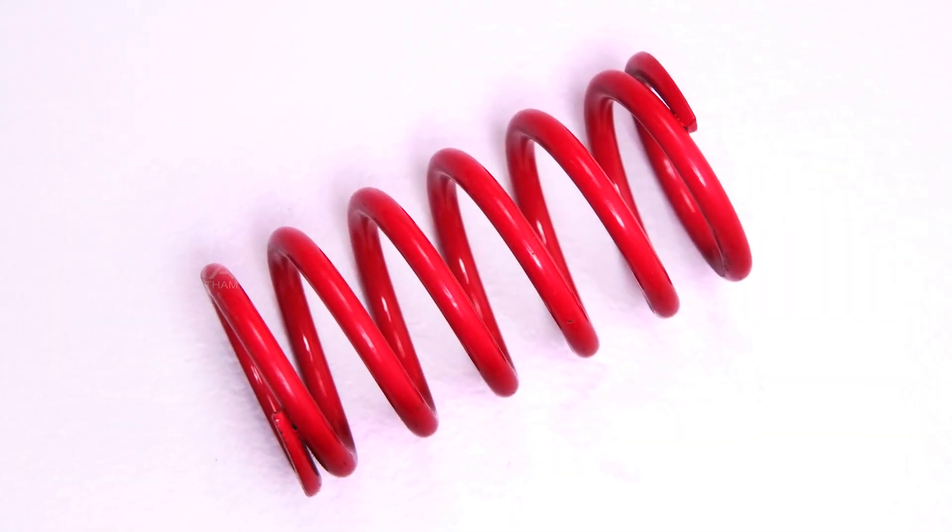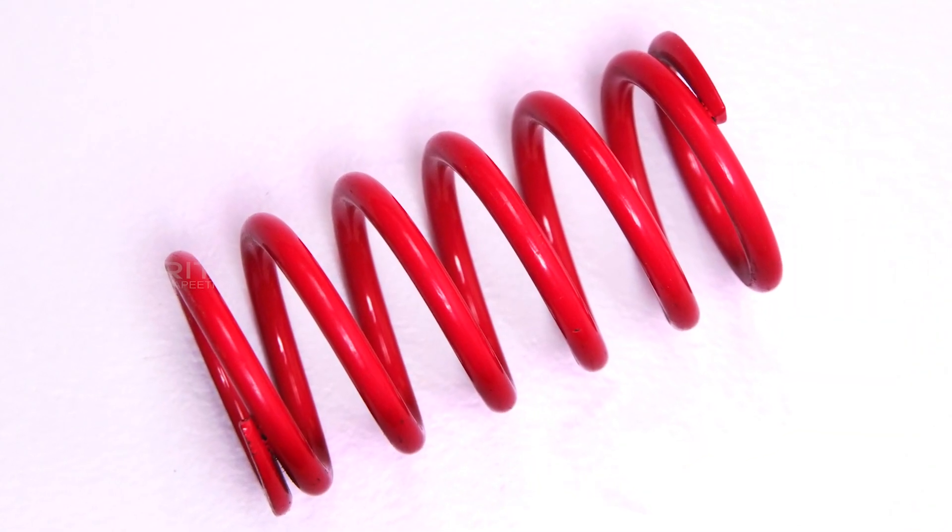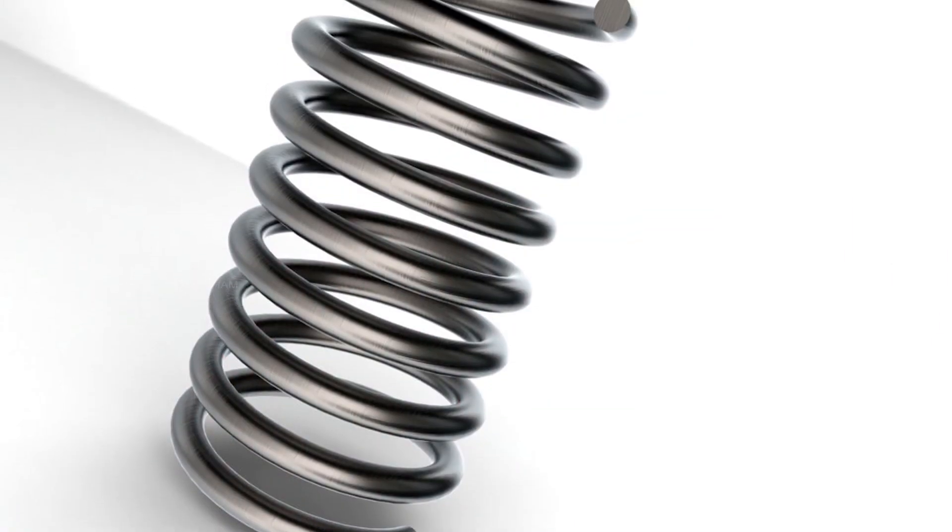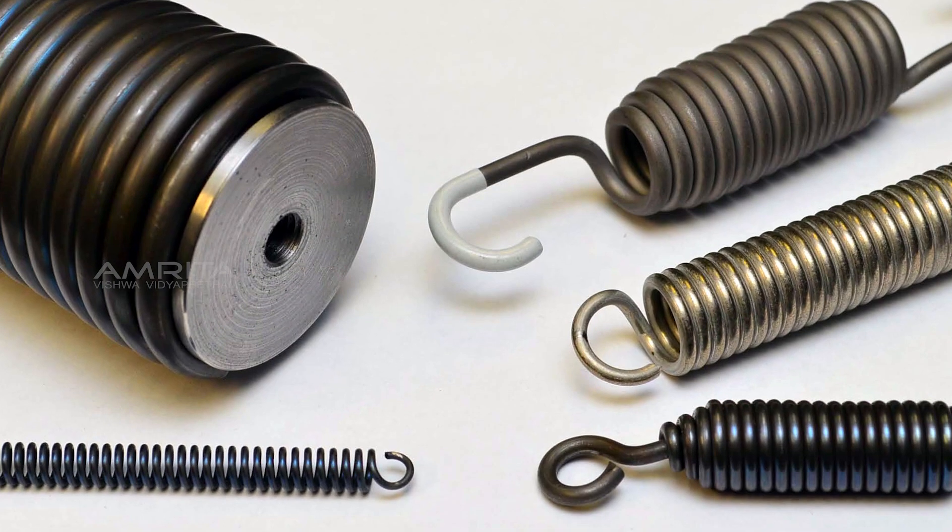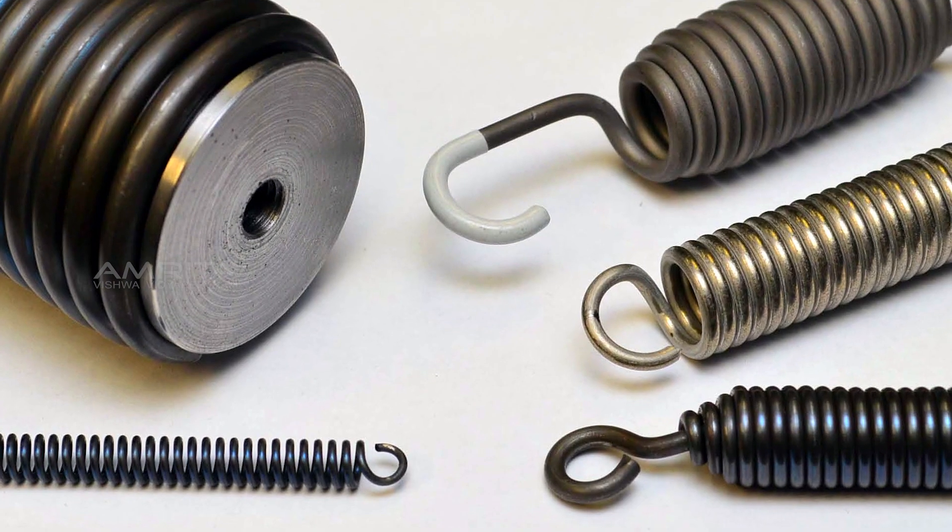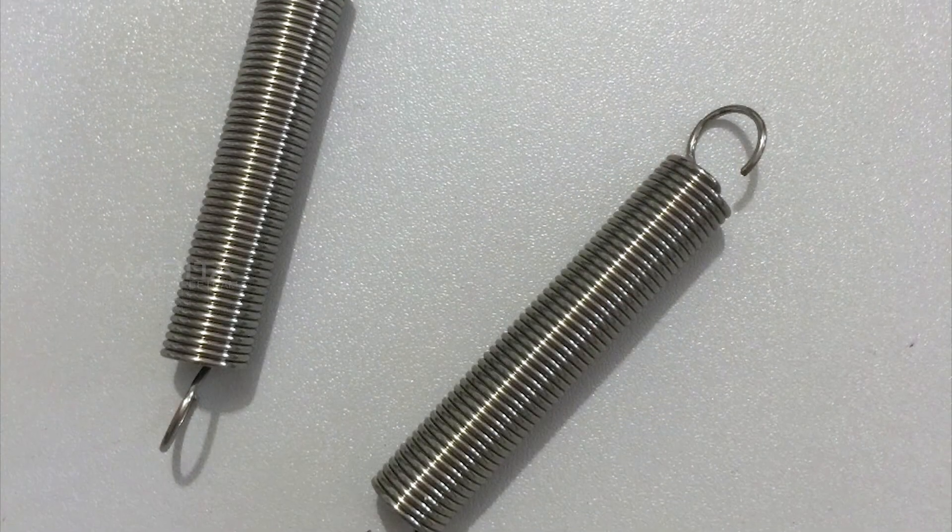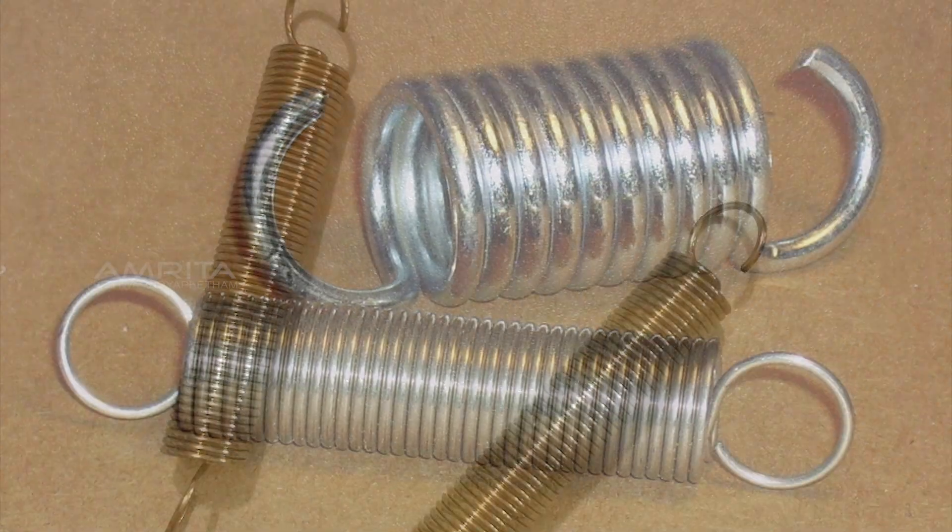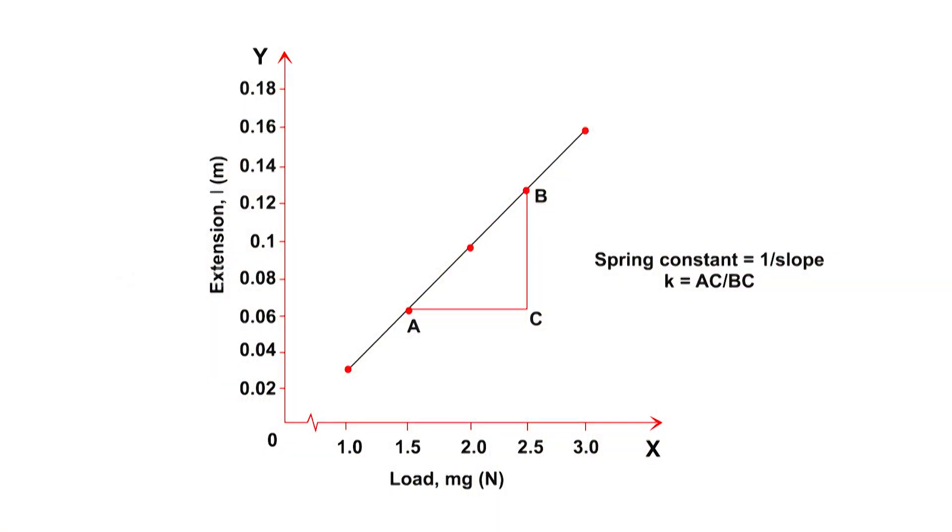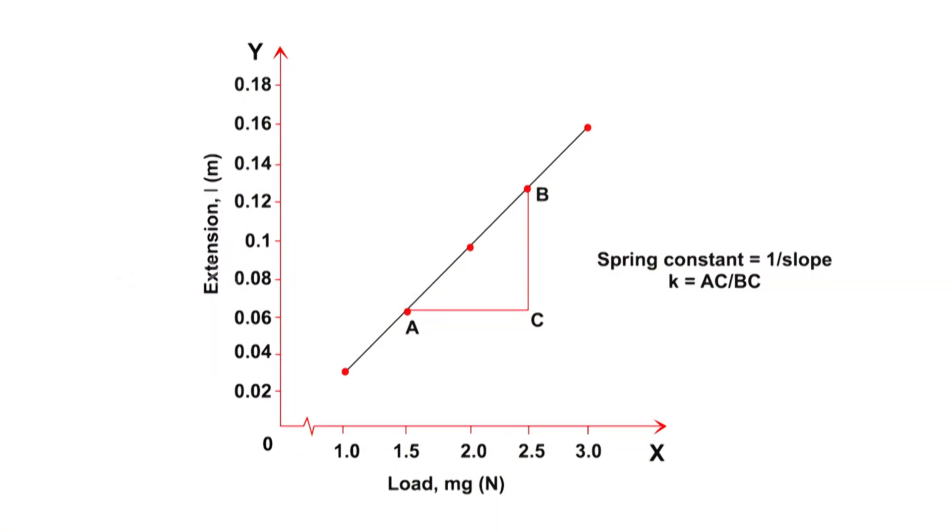Helical Spring. A helical spring is a wire coiled in the form of a helix whose function is to distort when loaded and to recover its original shape when the load is removed. Here, we are using this helical spring to find the force constant of the spring by plotting a graph between load and extension.